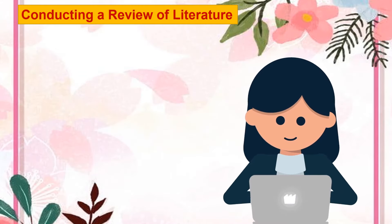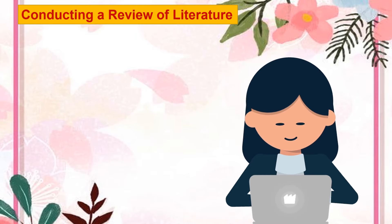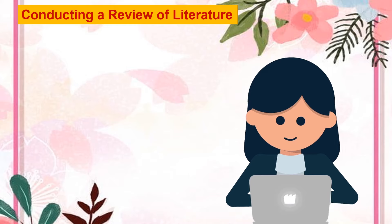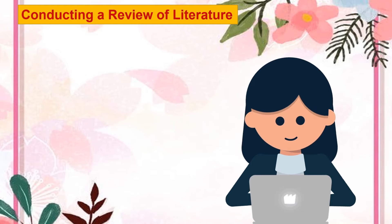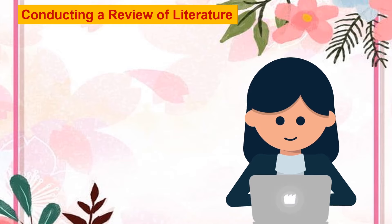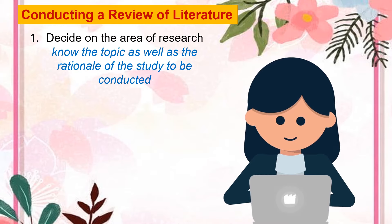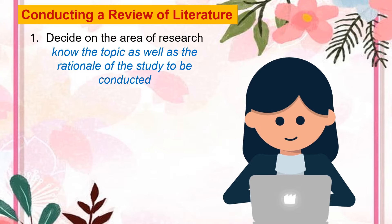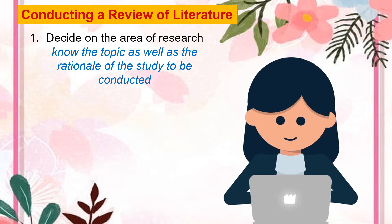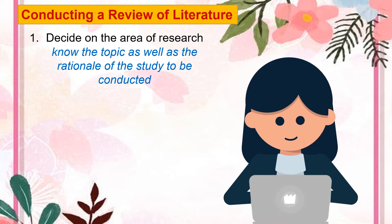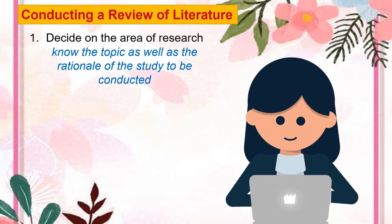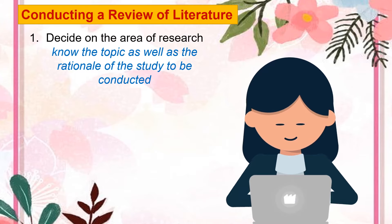When the researcher is about to engage in doing literature review, he or she must do it in a systematic procedure so as to arrive at a comprehensive output. Boza in 2015 of University of California presents six steps in conducting a literature review. First, decide on the area of research. The first step begins with a clear problem in mind. The researcher must clearly know the topic as well as the rationale of the study, which will allow focusing on articles and books that are relevant and can help substantiate the work.